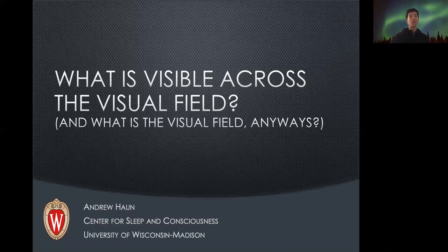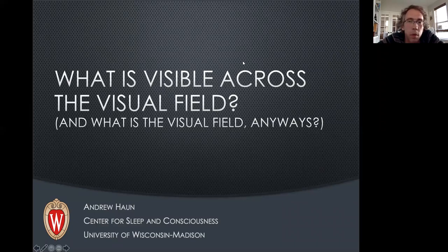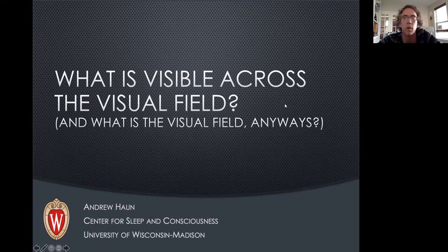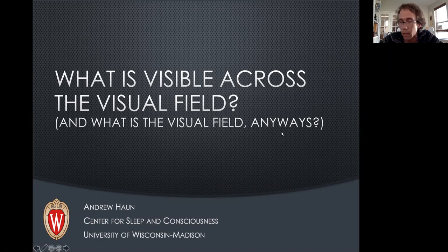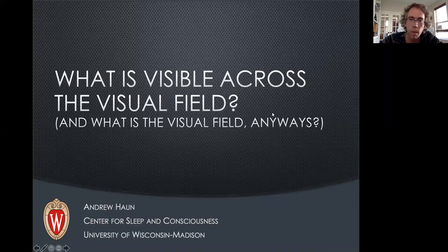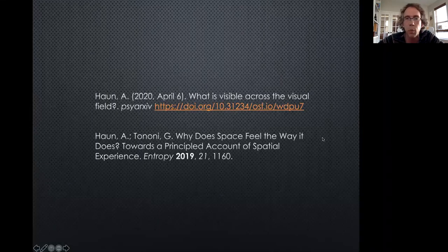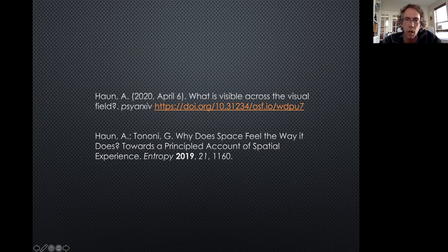The two parts of the title refer to the two parts of the talk. 'What's visible across the visual field' refers to how we evaluate visual quality and so on. The subtitle — 'What is the visual field' — is the IIT part. This is referring to two papers. Most of what I'm showing is pretty superficial; I'm not going to go through any computation — I'll just present things as they are. All the details are in the papers.